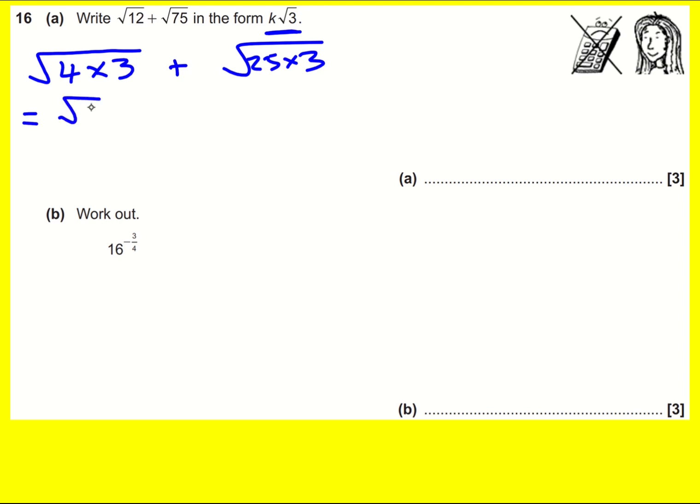We can now write down that we get √4 × √3 + √25 × √3. This is one of the rules of surds. So I get 2√3 + 5√3.